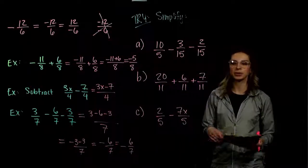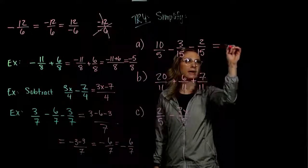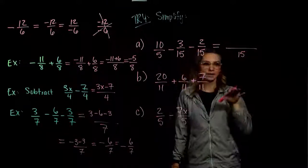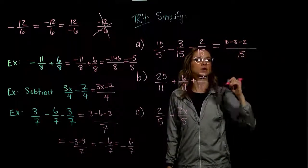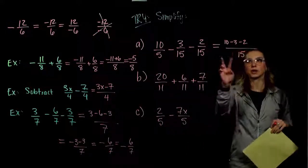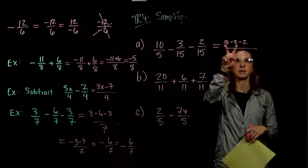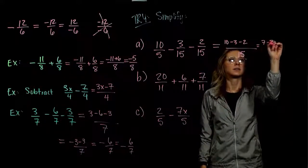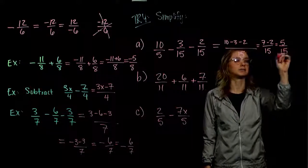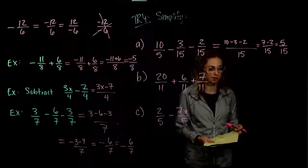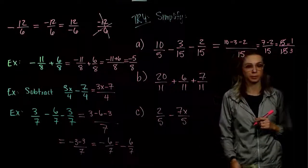Now there are three for you to try. In part A, we have a common denominator, so we keep that. Moving across the top: 10, negative 3, and negative 2. Working from left to right: 10 minus 3, the positive holds more weight, giving us 7. Then 7 minus 2 gives us 5 over 15, which reduces to one-third. 5 goes into 15 three times, with a placeholder of 1 up top.